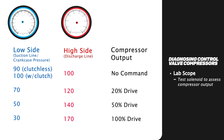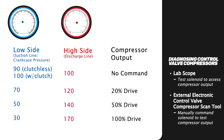Keep in mind that the swash plate and shaft are set to a two percent angle when the AC system is off. You can also use an external electronic control valve scan tool to verify input signal to the solenoid and issue variable commands to the solenoid to check compressor output.